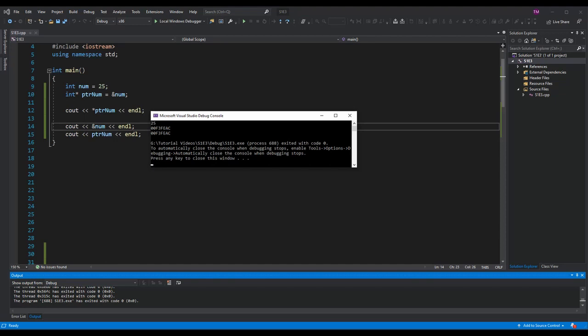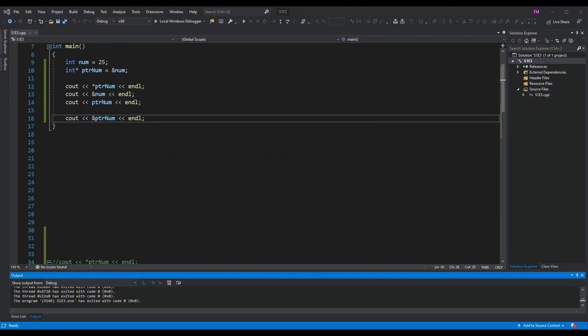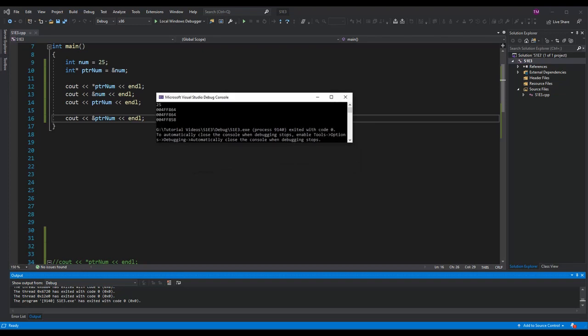As you know, a pointer is a variable that holds an address as its value. But can I access the address of the pointer itself? The answer is yes. On line 16, I am using the ampersand with ptr num to access the address of the pointer from line 10.